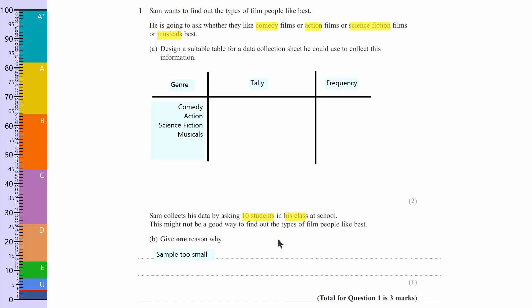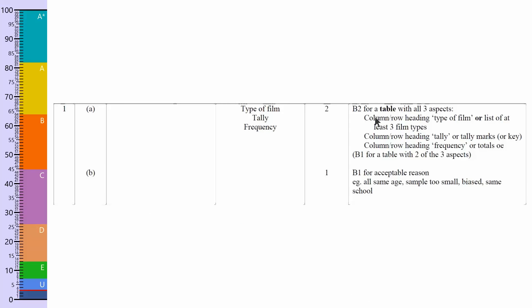So let's have a look at the mark scheme. As you can see here, you get two marks if you have all three of these things, which is the type of film column, the tally and the frequency columns. Now for the type of film, that would be absolutely fine just to do at least three film types. So you didn't even need to do all four. But it's best to do all four in case the mark scheme is different next year.